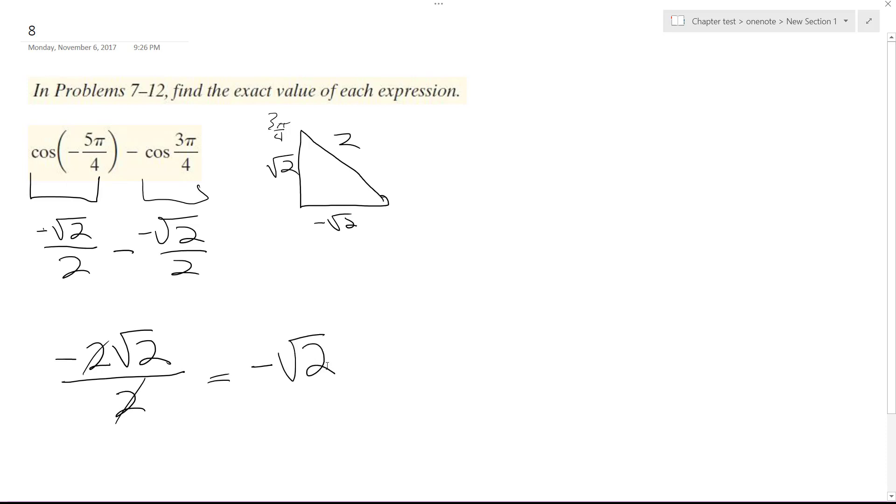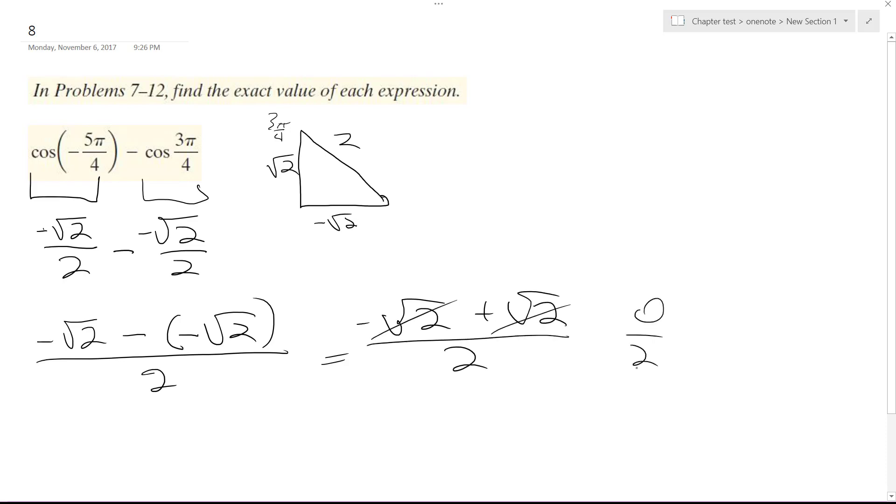Oh, hold on a second here. I made a mistake. Everything was right, except this is a minus, and actually the minus cancels out. So it ends up being negative √2 minus negative √2, all over 2. So this becomes negative √2 plus √2, all over 2. Cancels off, 0 divided by 2, so it's just 0.